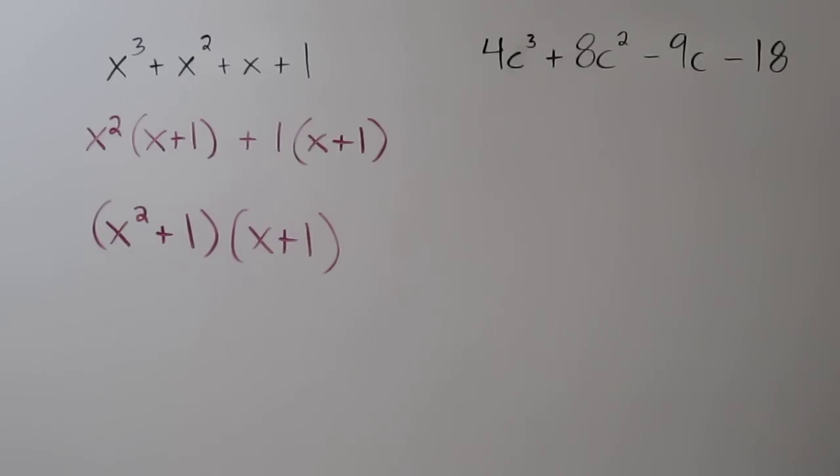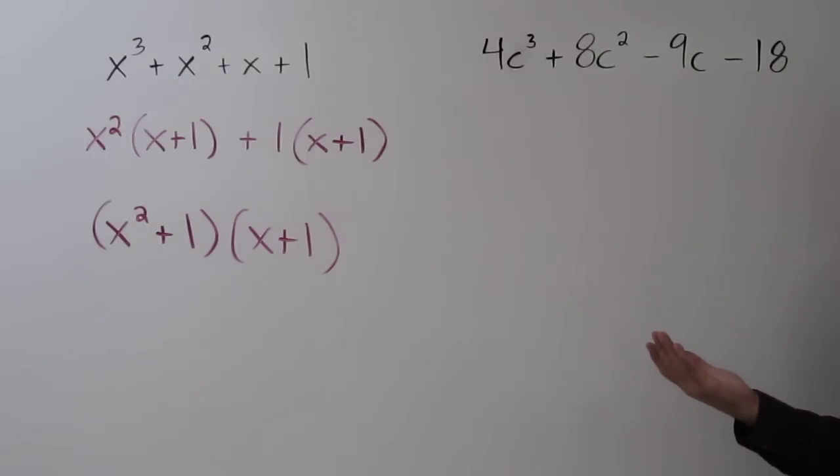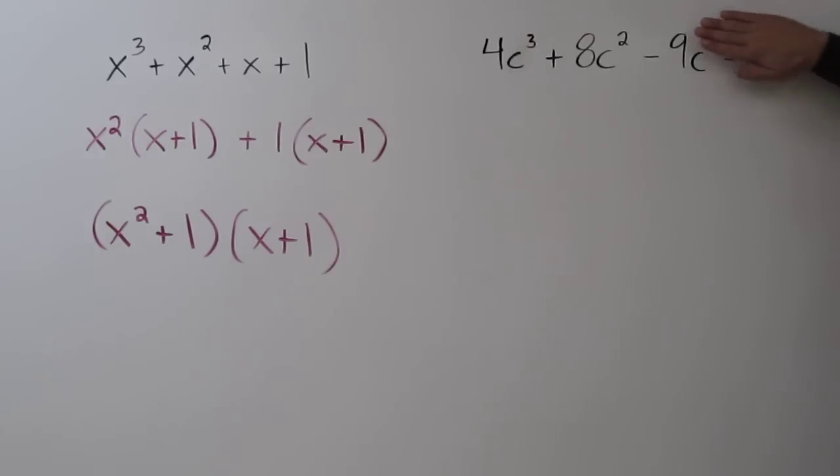Now at first I want to say let's factor out a 2, but negative 9 is an odd number, so we can't factor out 2. We can't even factor out a c, because 18 doesn't have a c in it. So let's look at the first two terms.